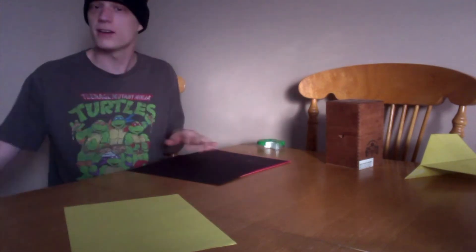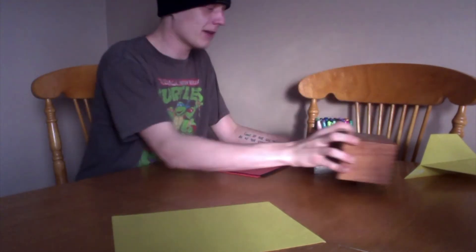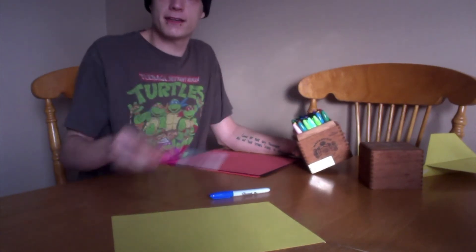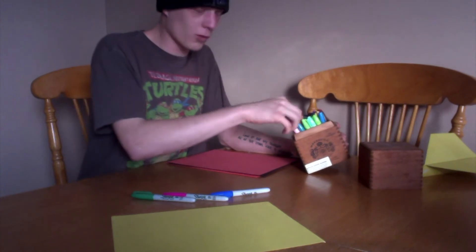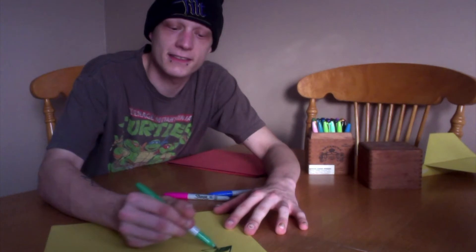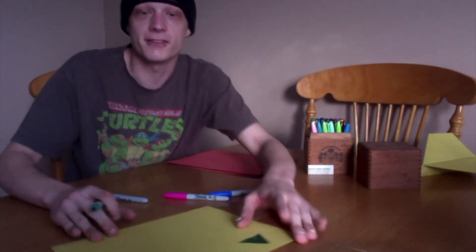First thing we're going to do is we are going to decorate our paper. I'm going to do yellow first. So I need something to decorate my paper with. So I'm going to choose out some markers. I think I want blue, pink, green, I like green, and how about orange? Okay, so we get to decorate our paper. I think I'm going to draw a green triangle. And then I can color it in. So there's my green triangle.